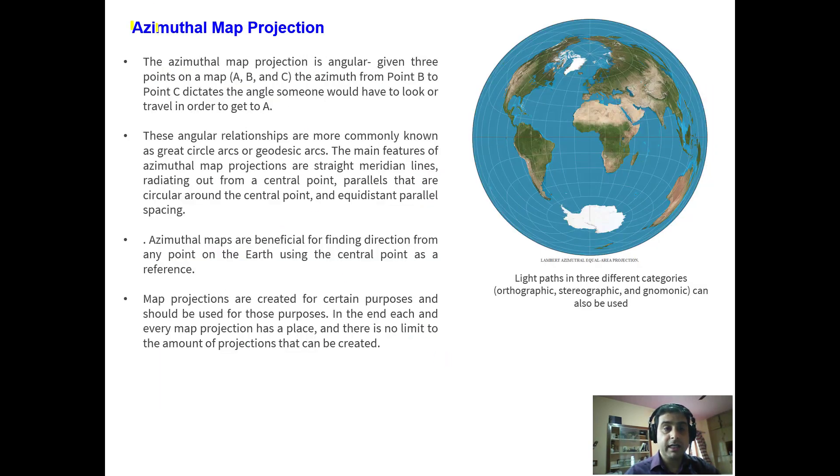We have the final one, azimuthal map projection. It is angular map projection. When we have three given points on map A, B and C, the azimuth from point B to point C dictates the angle someone would have to look or travel in order to get to A. These angular relationships are more commonly known as great circle arcs or geodesic arcs. Azimuthal maps are beneficial for finding direction from any point on the earth using the central point as a reference.